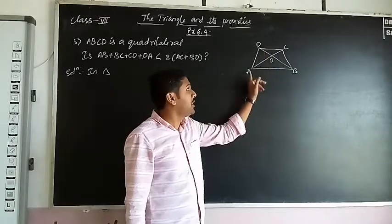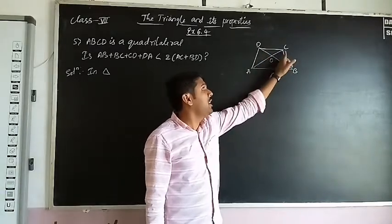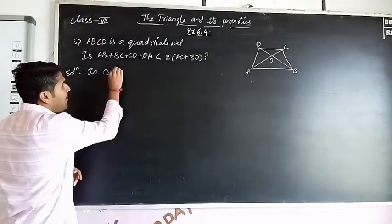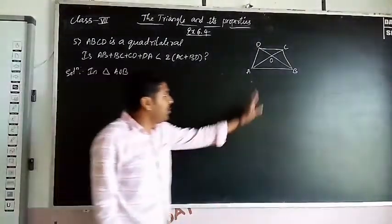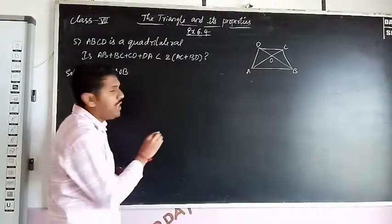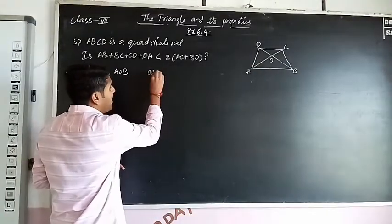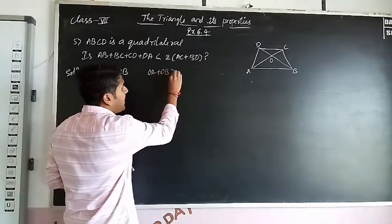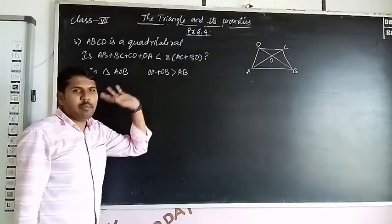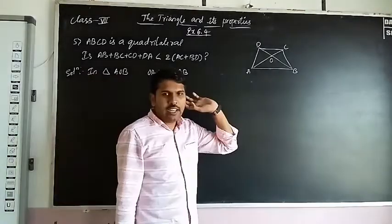Take point O inside. Now join all the vertices to O. That is AOB, next BOC, COD, and DOA. So we have four triangles. Take it as O. In a triangle AOB, OA + OB is greater than AB. This is the condition for a triangle.